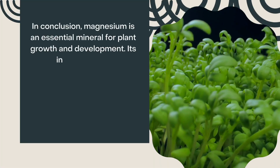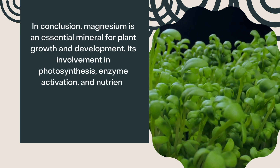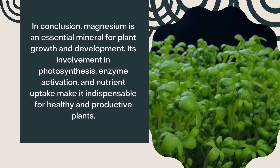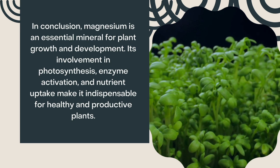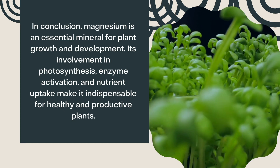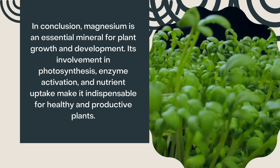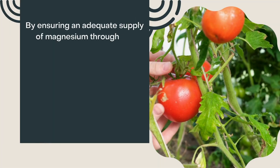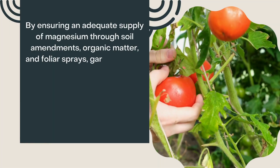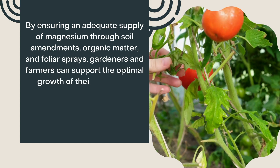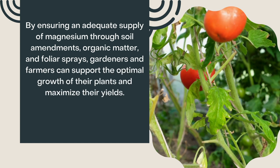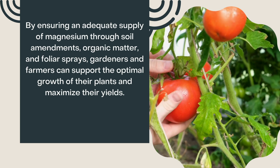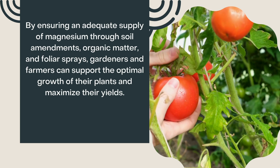In conclusion, magnesium is an essential mineral for plant growth and development. Its involvement in photosynthesis, enzyme activation, and nutrient uptake make it indispensable for healthy and productive plants. By ensuring an adequate supply of magnesium through soil amendments, organic matter, and foliar sprays, gardeners and farmers can support the optimal growth of their plants and maximize their yields.